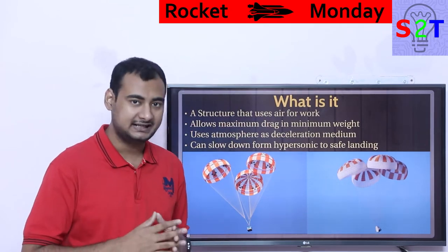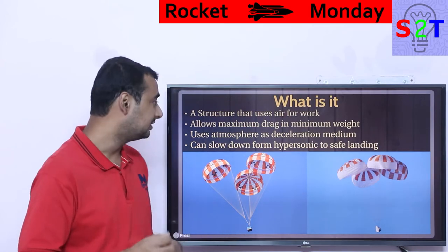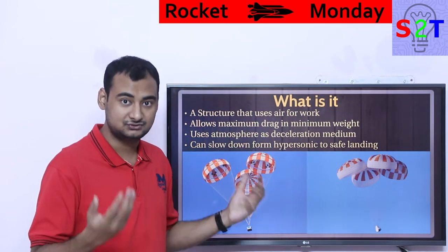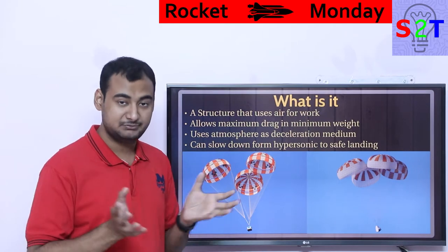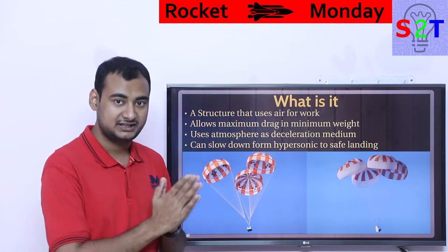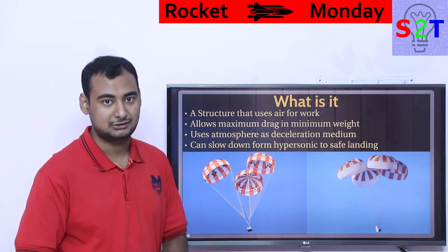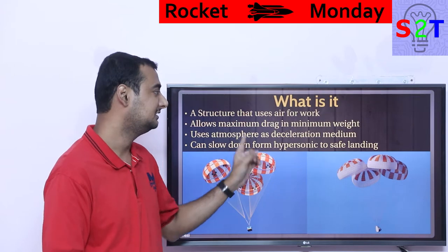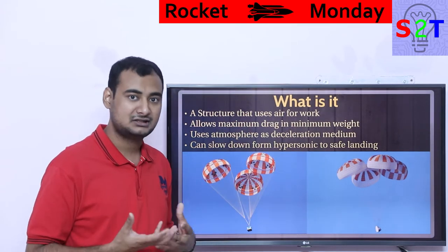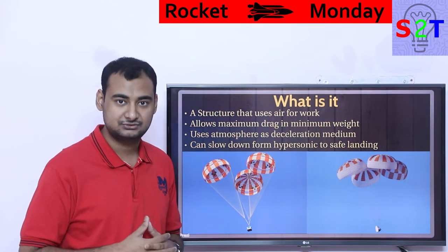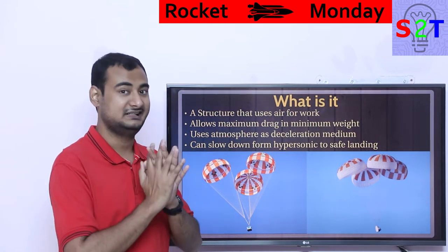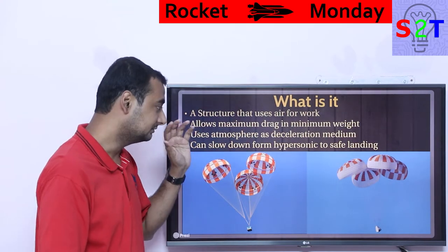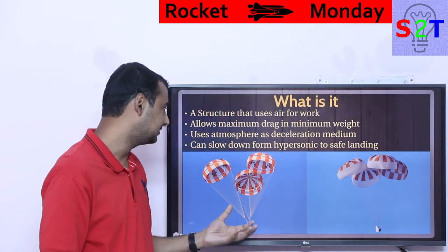First we have to understand what we are talking about. A parachute is a structure that uses air for useful work. The main selling point — why we use a parachute rather than a rocket — is that it allows maximum drag for minimum weight. There are other systems that provide drag, but none of them match the drag-to-weight ratio of a parachute.